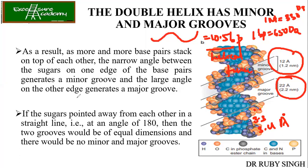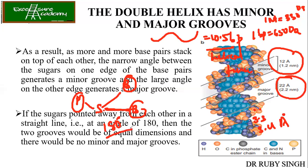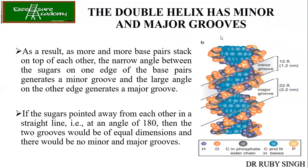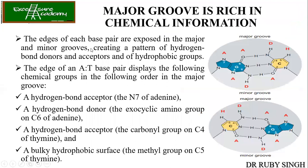If the sugars pointed away from each other in a straight line at an angle of 180°, the two grooves would be of equal dimension — there would be no major or minor groove, only one kind. But because they make a certain angle, you get grooves of unequal size. The edges of each base pair are exposed in the major and minor grooves, creating a pattern of hydrogen bond donors and acceptors.